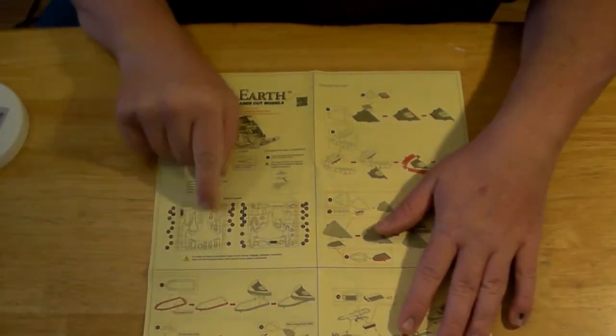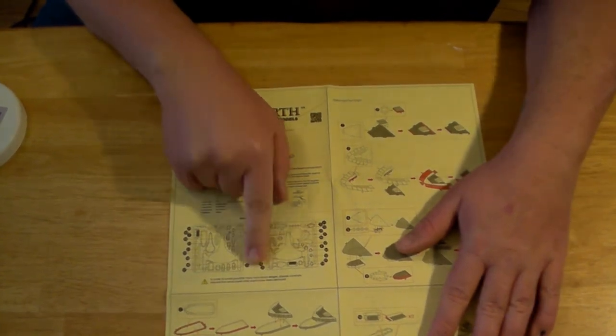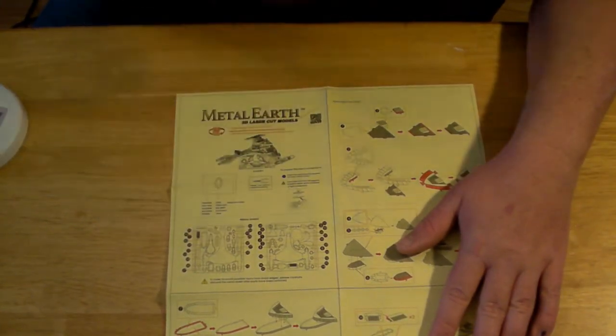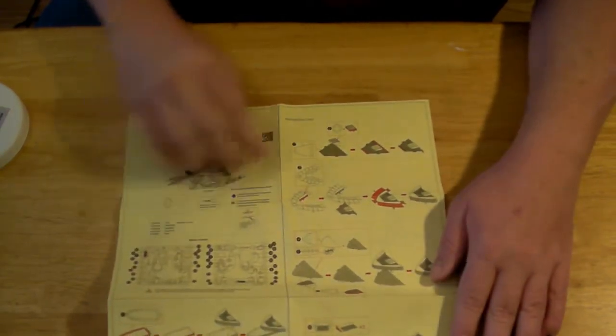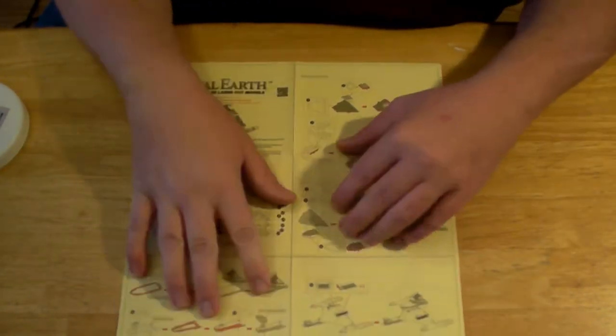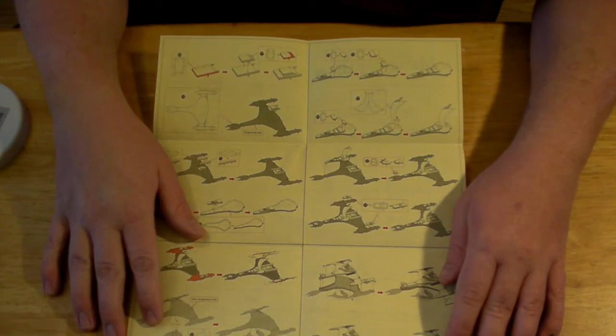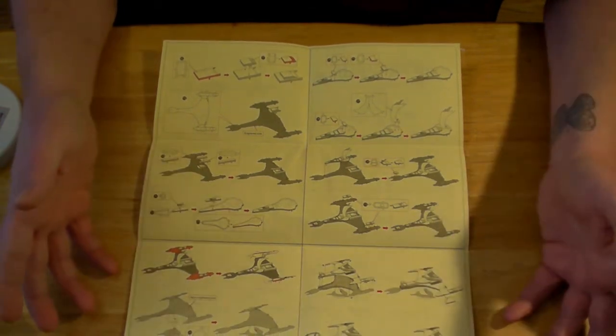You have your two sheets with all the numbers pointing to the different pieces. Because in your flow chart it tells you the number of the piece and generally how to fold it. And we're dealing with an instruction sheet that is two sided.